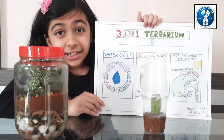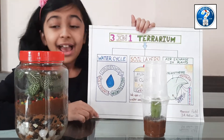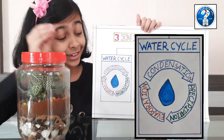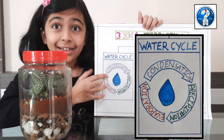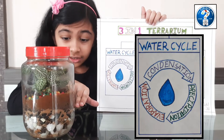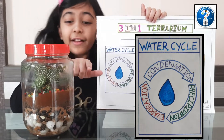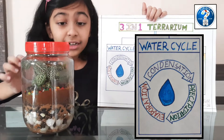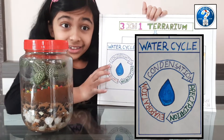Let me show you how. Let's find the answer to the question of how it will get water. As we are going to keep this jar in sunlight, the sun's heat will evaporate some of the water, which is called evaporation. This water turns into water vapor and rises up. Then, you can see that at the edges, it condenses.